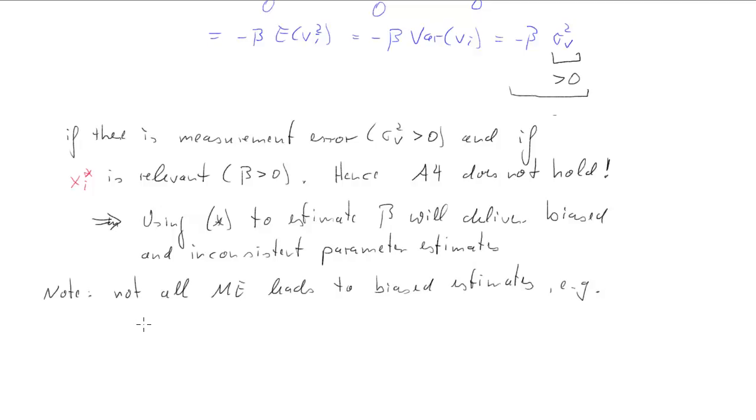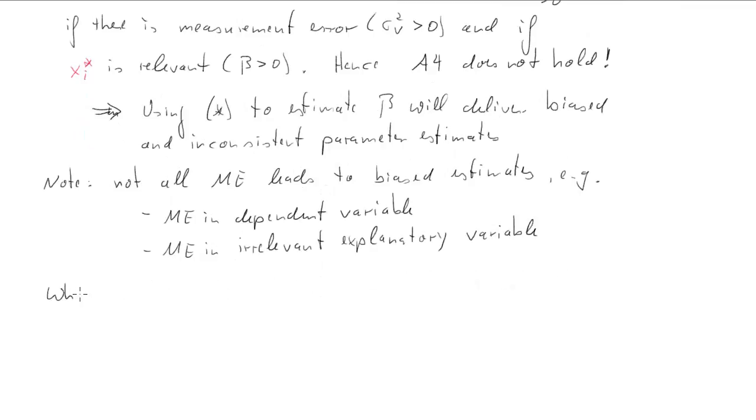However you should note that not all measurement error actually leads to biased estimates. For instance, measurement error in the dependent variable will not lead to biased parameter estimates, and neither does measurement error in irrelevant explanatory variables. That's the case where that beta is actually equal to zero. So in that case we will also not have problems with our parameter estimates.